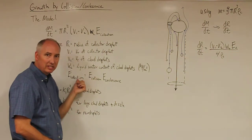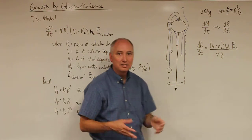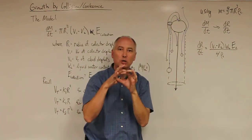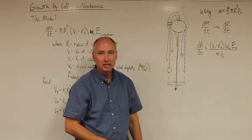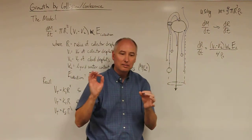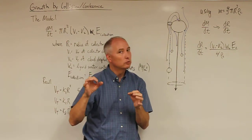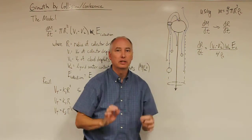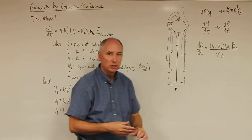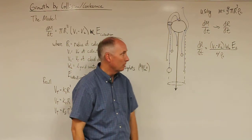The collection efficiency is the product of the collision efficiency and the coalescence efficiency. The coalescence efficiency is the probability that two droplets will coalesce into a larger droplet if they do collide — generally a very high probability. However, at particular droplet sizes and collision angles, droplets can actually bounce off one another. Research by Roland List in Canada showed that droplets can bounce or even break up into smaller droplets.